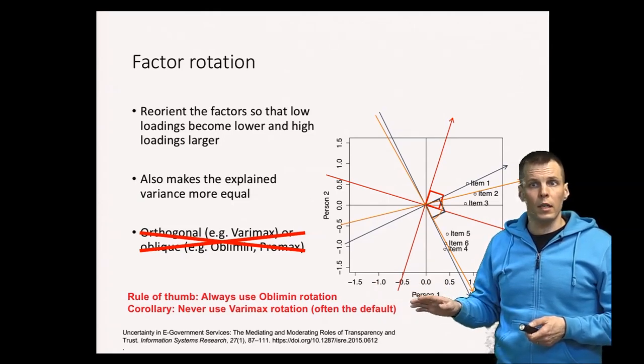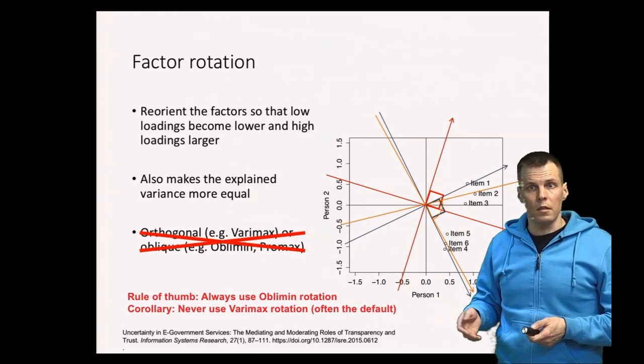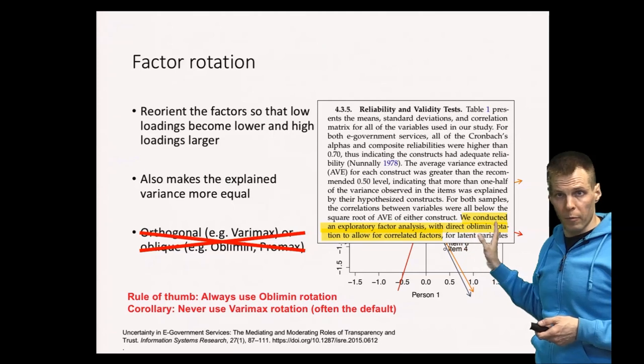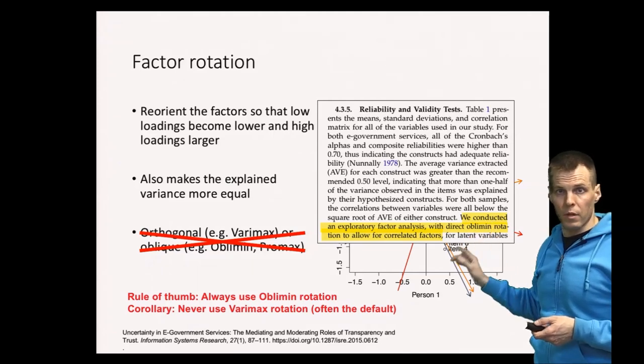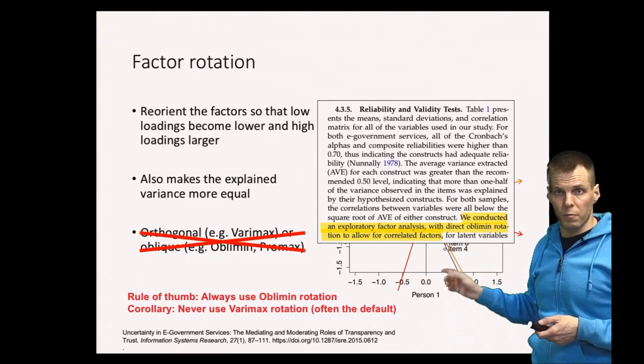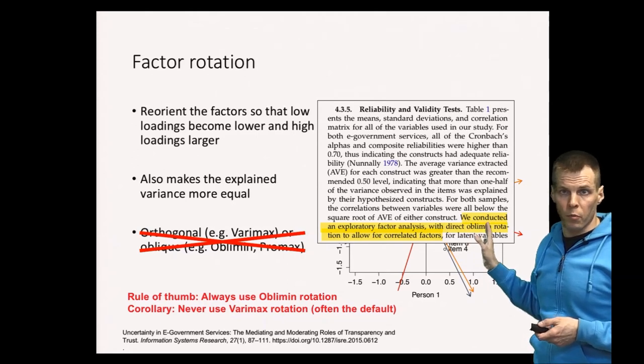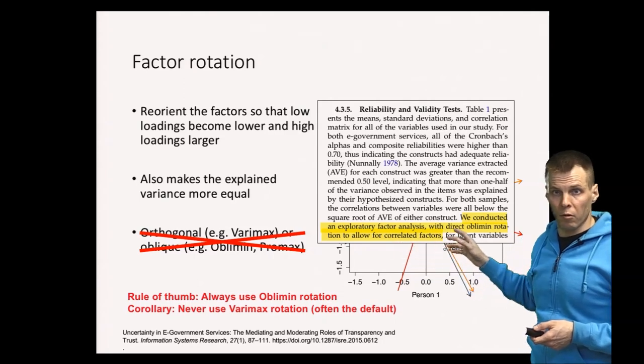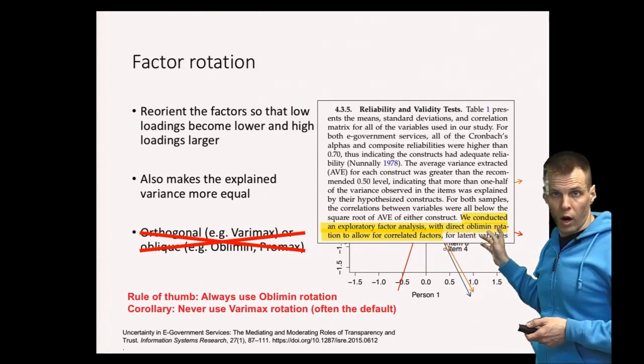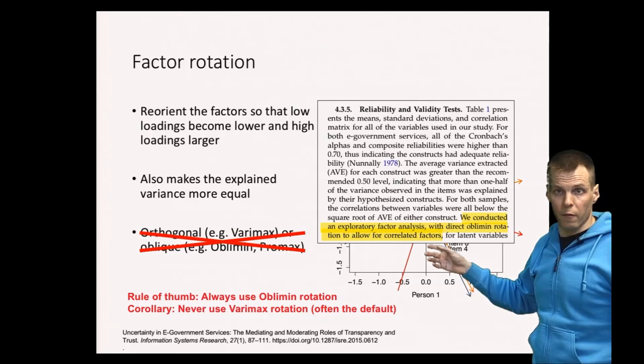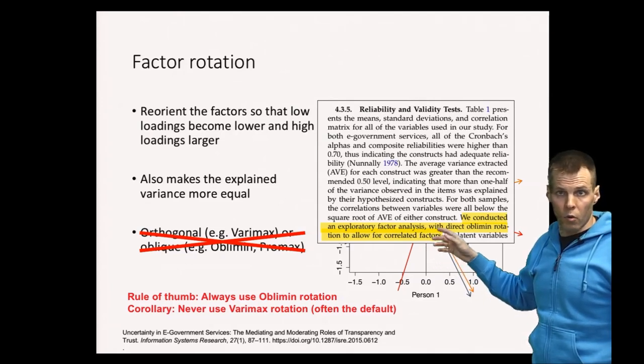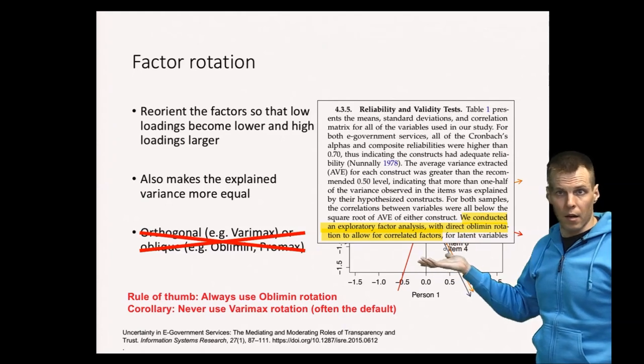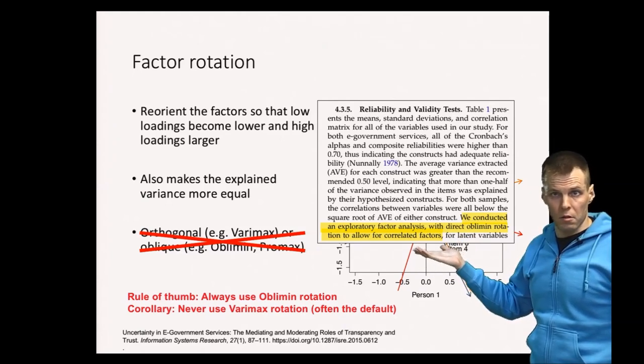And when you look at articles they actually report that oblimin is used. So this is a pretty nice way of reporting a factor analysis from this information systems research paper. The authors report that they conducted exploratory factor analysis, they did oblimin rotation, and they also explain why they did oblimin rotation because they want to have the factors to be correlated. And you only need one sentence and two lines for that. So that's really a nice way of reporting that you actually did factor analysis correctly.